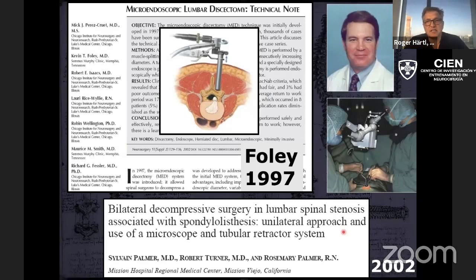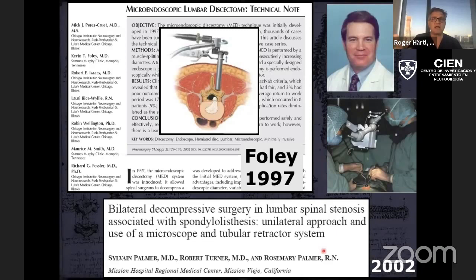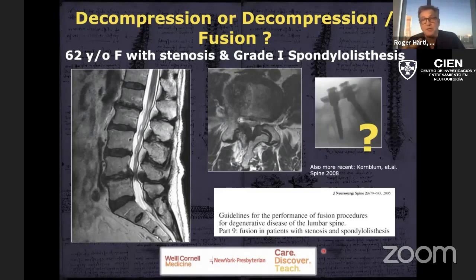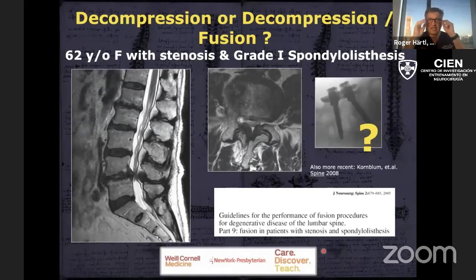The first author I know of who described tubular decompression for lumbar stenosis is Sylvain Palmer in a 2002 publication. When I trained and came back to New York, I systematically started using that, and it became so obvious — low morbidity, low blood loss, low infection rate, so much better than open laminectomy. I expanded its use to patients with spondylolisthesis. The classical teaching was always that as soon as you see spondylolisthesis you have to do a fusion — even guidelines in the early 2000s recommended fusion for lumbar spinal stenosis with spondylolisthesis. Surgeons used open surgery and destabilized facet joints, so those patients needed fusion.